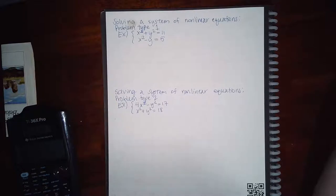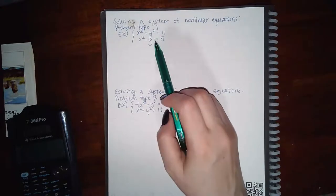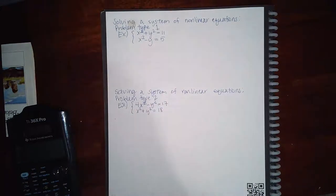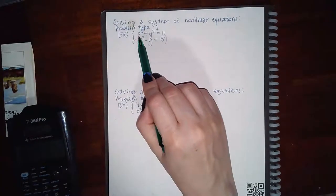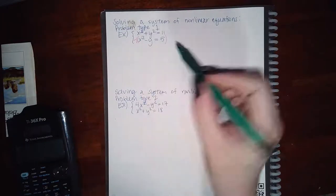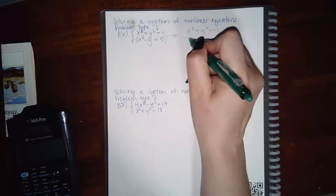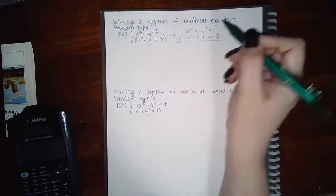Here we're solving a system where both equations are nonlinear, so you really have to pay attention to which term you want to eliminate. I have y² and y — those are not the same kind of term, so I cannot cancel the y's. However, I have x² and x², so those I can cancel. I'm going to multiply the bottom equation by negative one, giving me a positive x² and a negative x² which cancel each other out.